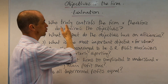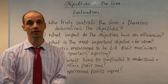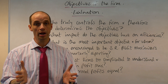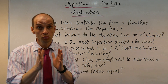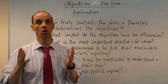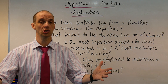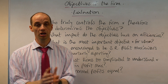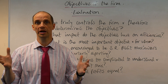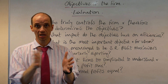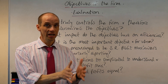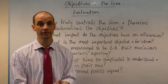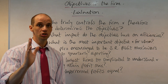Number one: who truly controls the firm and therefore determines the objectives? Just today, May 2018, Elon Musk has declared another record loss for Tesla but remains so focused on the long-term growth maximization of Tesla. He clearly is in a very dominant position within the company and retains a huge amount of control. That helps to actually mitigate the principal-agent problem that we saw in last lesson, where there can be a pursuit of profit satisficing.